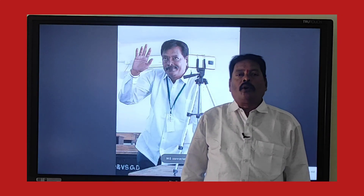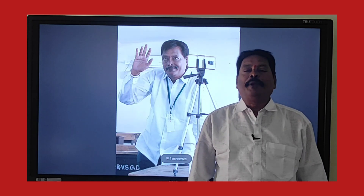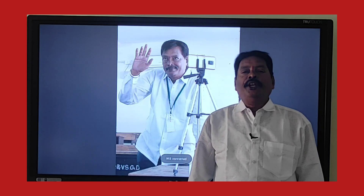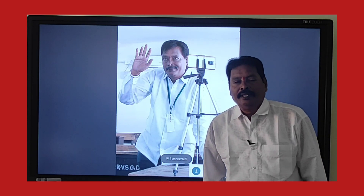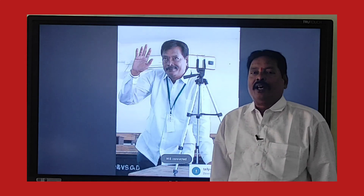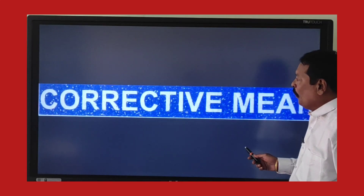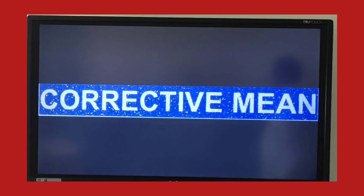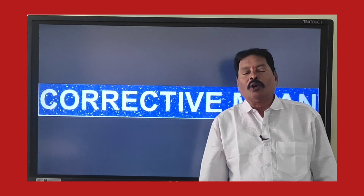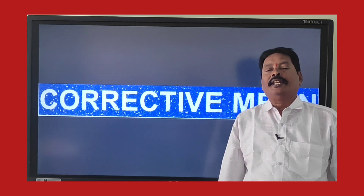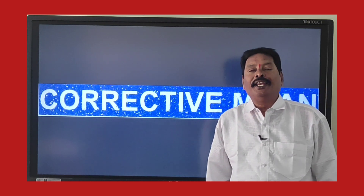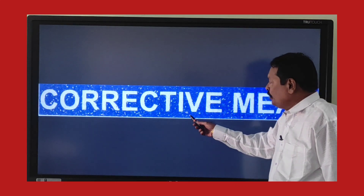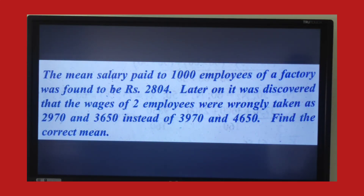Hi students, today our topic is related to business statistics for B.Com third semester students. The first unit is measures of central tendency. In this first chapter there are five averages, one of which is arithmetic mean. This arithmetic mean has different models. Today we are discussing one of the models: the correct mean. This model is generally given for three marks in some universities and five marks in others. Mostly it is a short question.